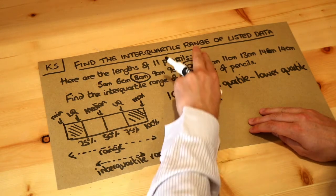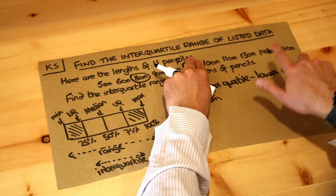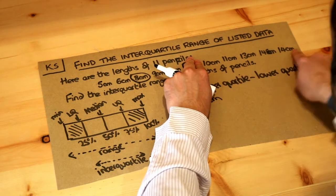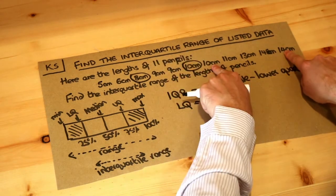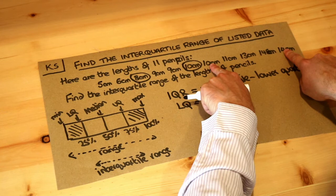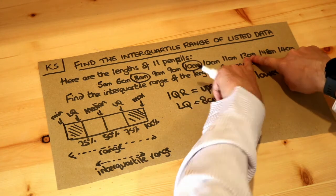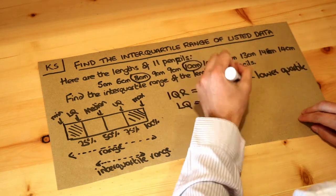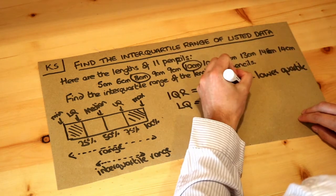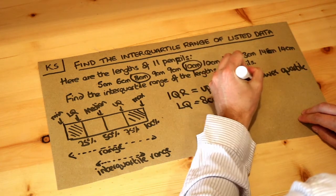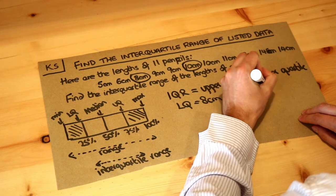Again, ignoring the middle value, we find the median of the upper half by counting inwards — giving us 13 centimetres. So the upper quartile is 13 centimetres.